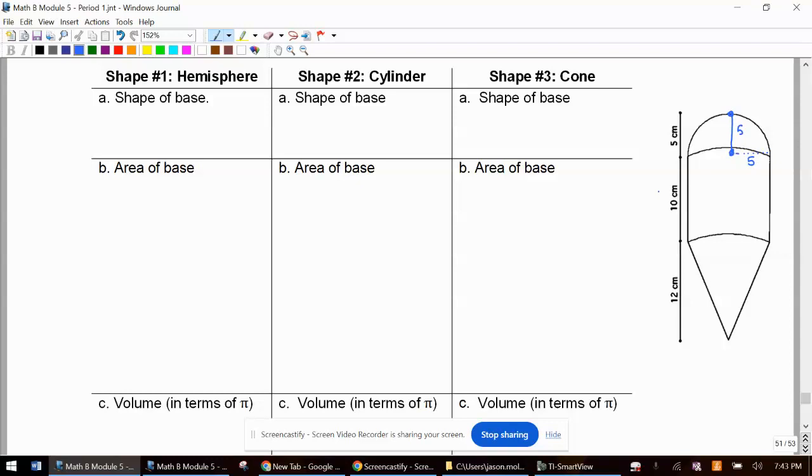Then it gives us the height of the cylinder and the height of the cone, and here's the radius again, which is 5. And so they kind of snuck this in, but it's actually the radius for all of the shapes.